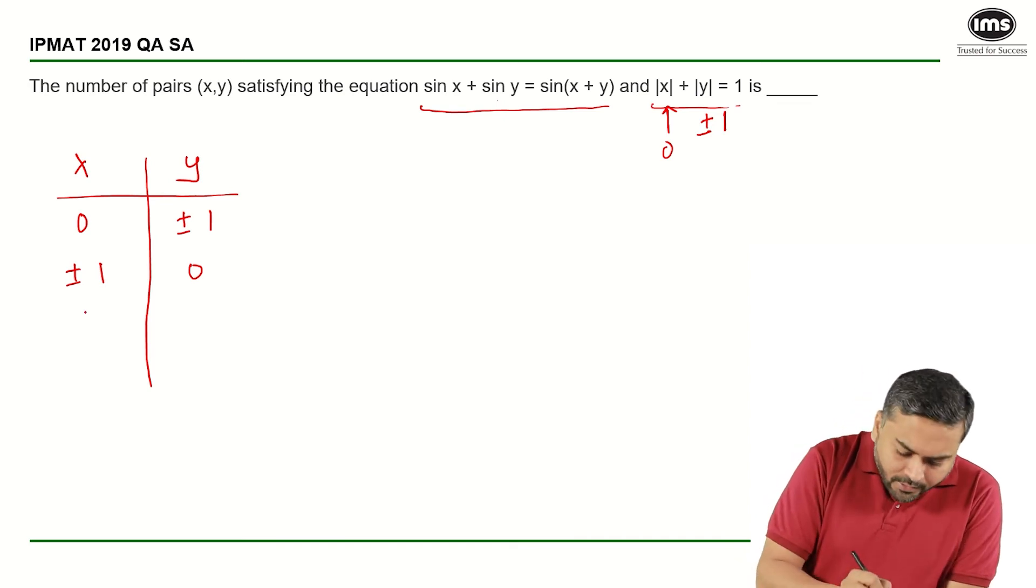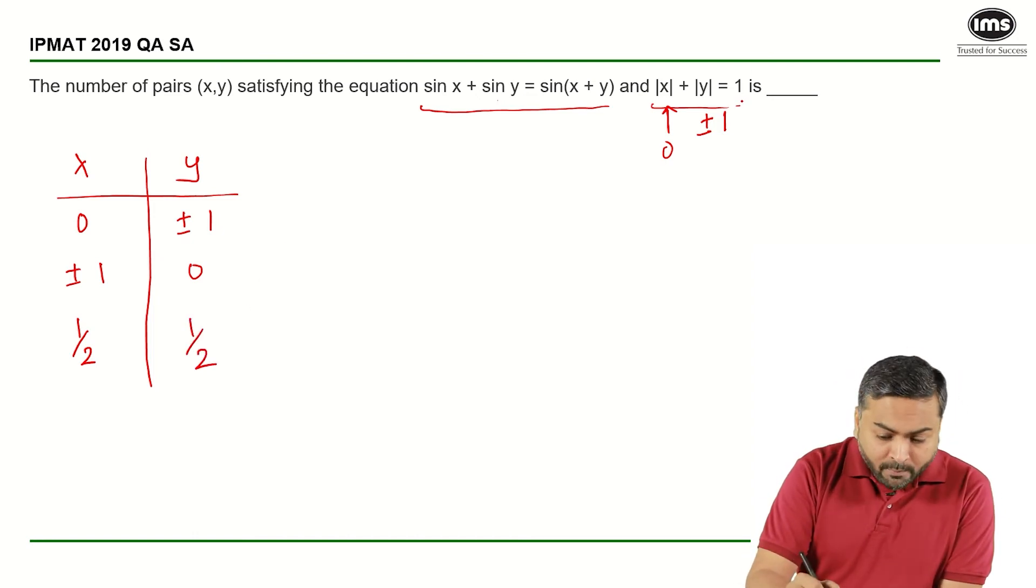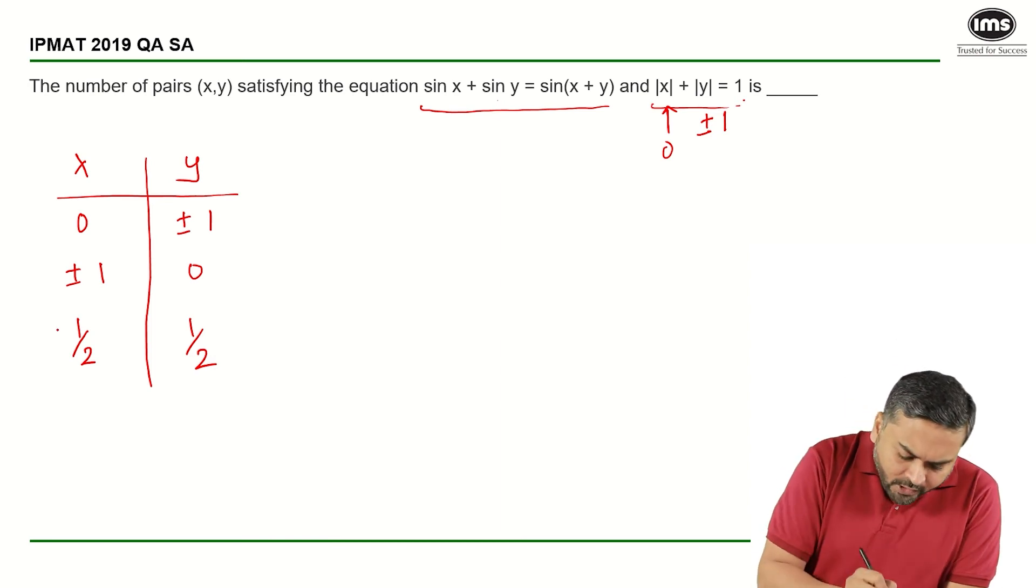What if I assume x is equal to half and y is equal to half? This will be 1, this will be sin half plus sin half and this will become sin of 1. So that probably will not work out. But what if I assume x to be half and y to be minus half?